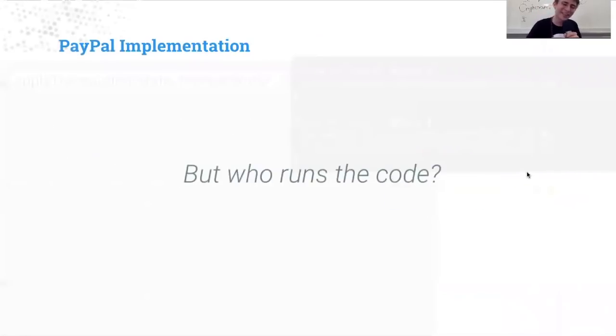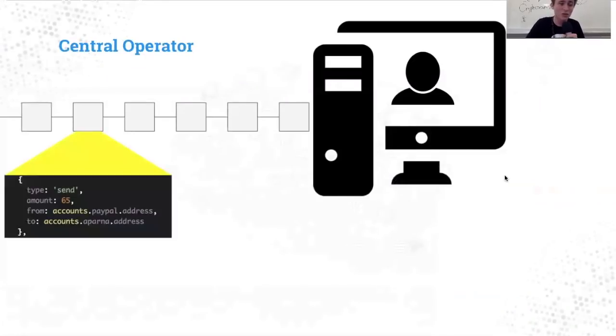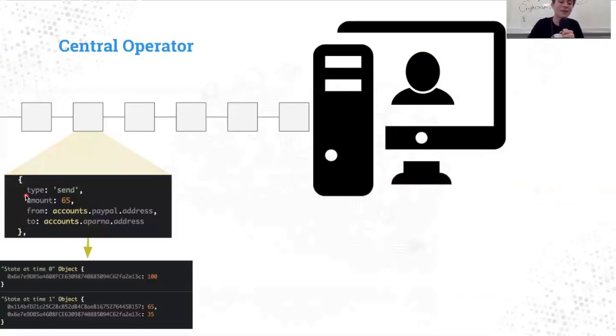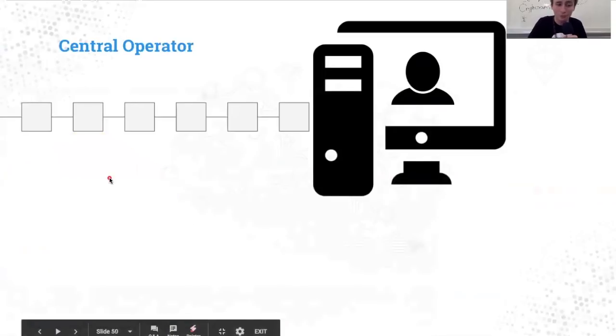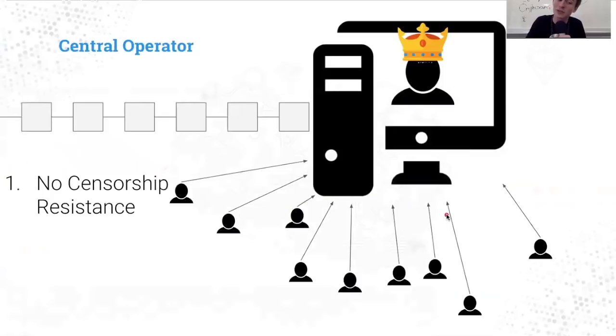But now it gets a little bit more complicated when you think: who runs the code? In our initial version, we'll have a central payment operator. These blocks represent the transactions and state transitions we talked about earlier. The problem with the central payment operator is that there is no censorship resistance, and the power is not equally distributed amongst the participants.